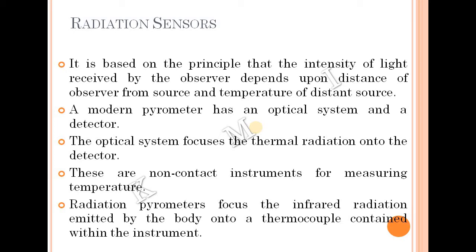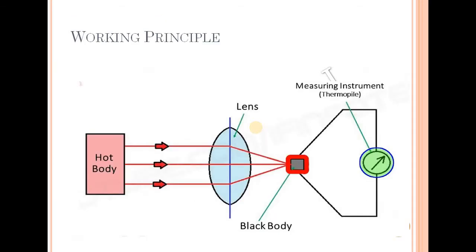The radiation pyrometer focuses infrared radiation emitted by the body onto a thermocouple contained within the instrument. This is a pictorial representation of the working principle — it shows a hot body whose temperature we measure. It can be a high temperature source.